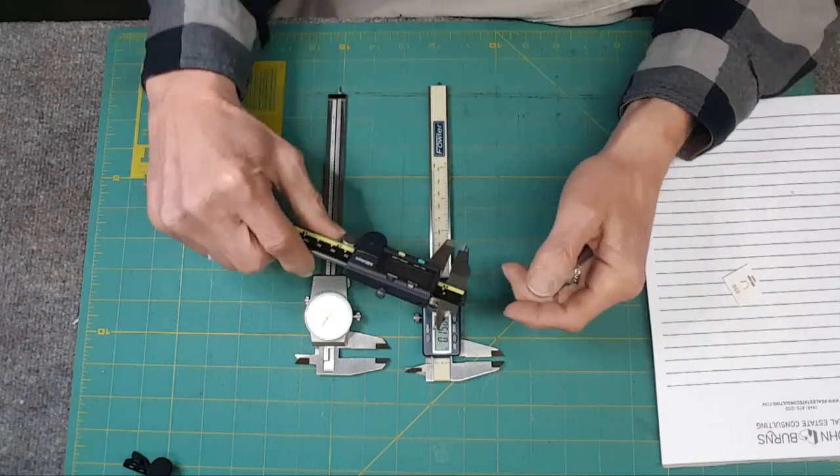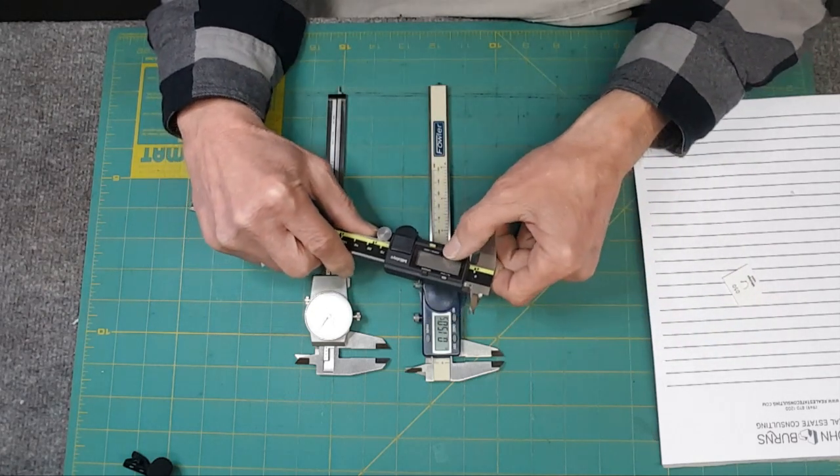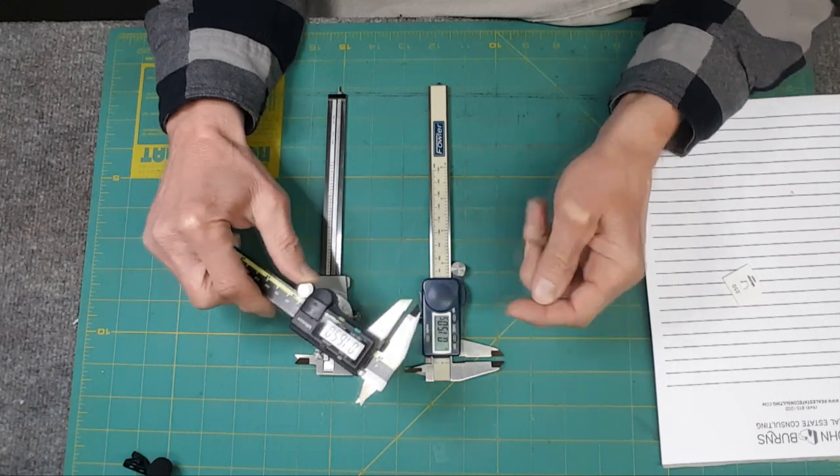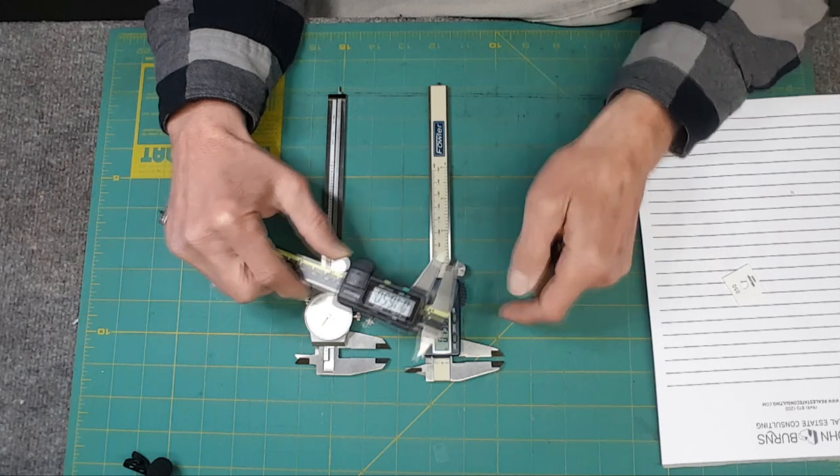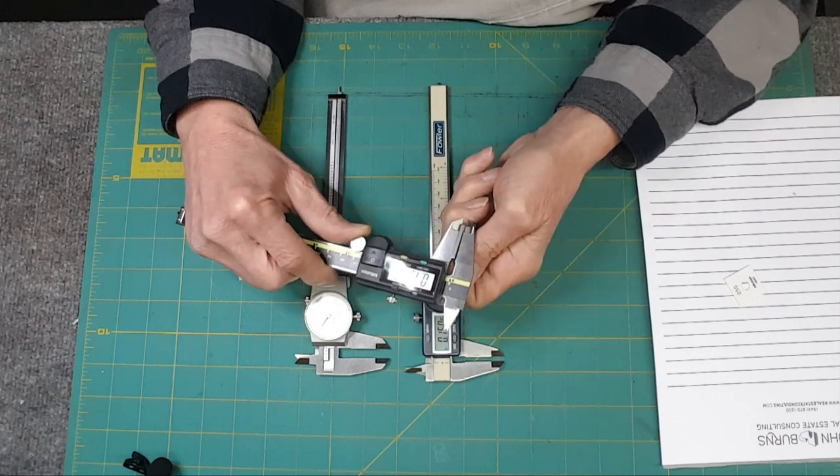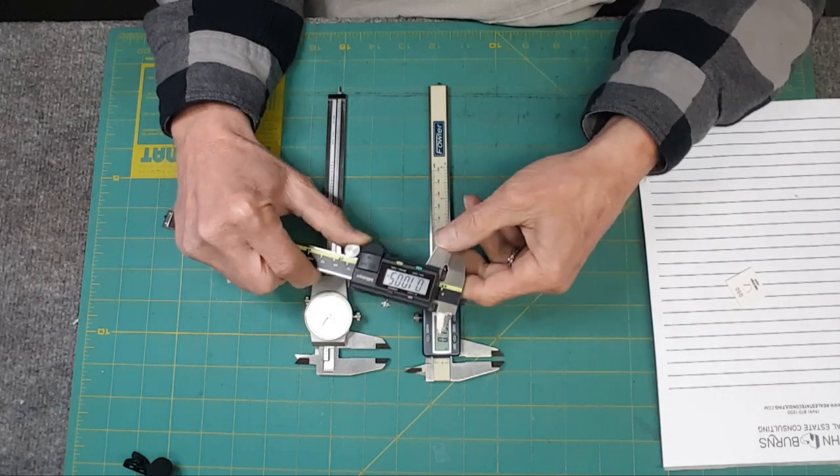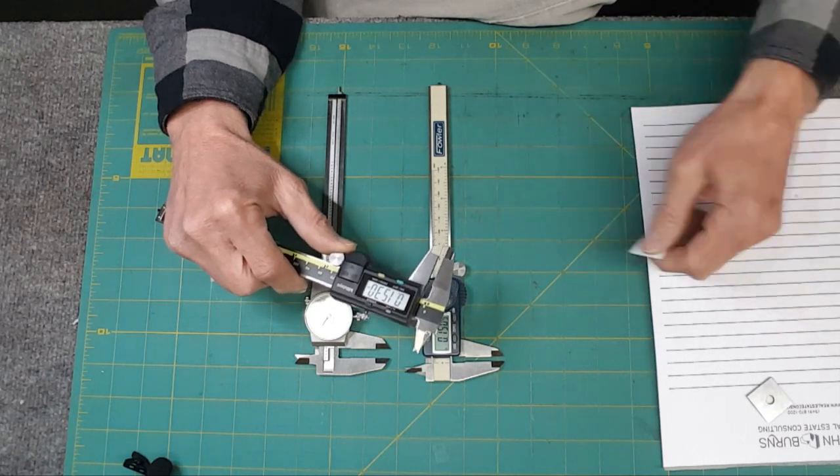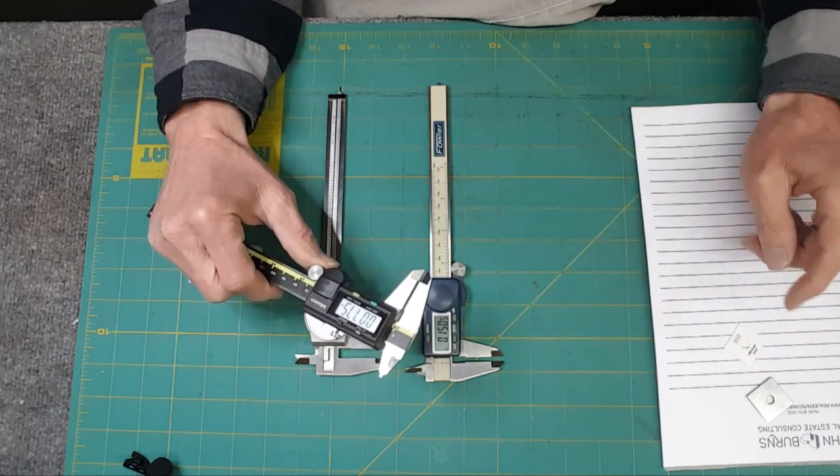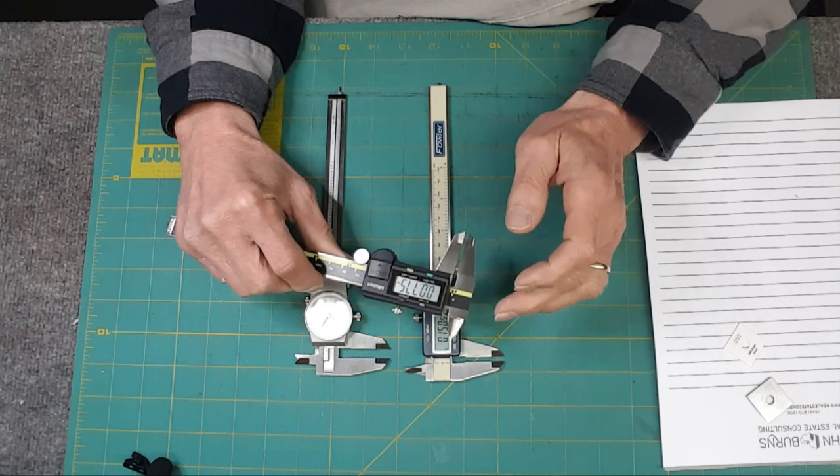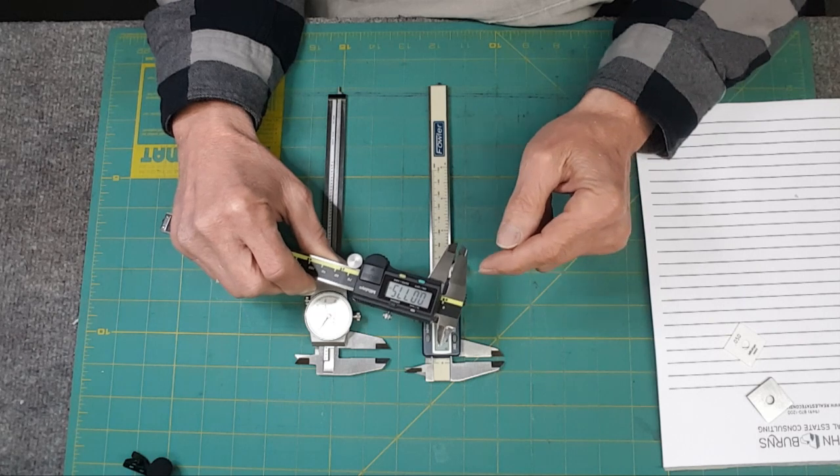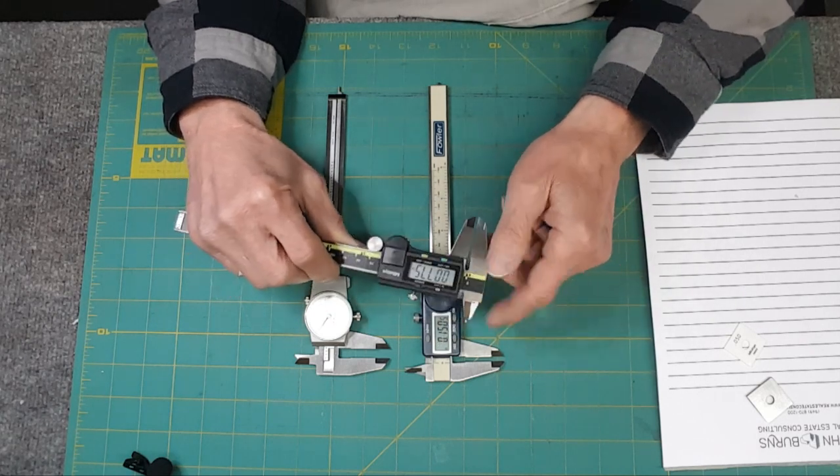This guy, $160 bucks, Mitutoyo, shows a half a thou. Again, you look at the specs, $160 bucks over $40 bucks, plus or minus one thou. Let's see what he's going to do here. This is point one zero zero five, there it is. Fifty thou, right on the money.